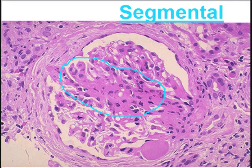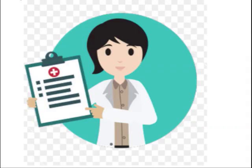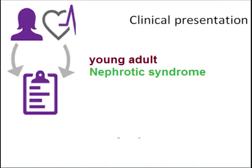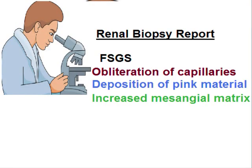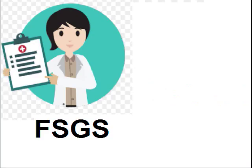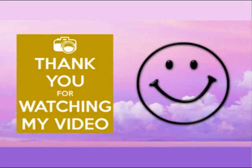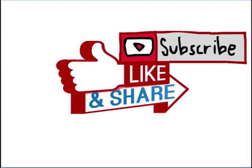Making a provisional diagnosis, we look at the points which support our diagnosis from the clinical presentation: young adult with nephrotic syndrome. The renal biopsy report reveals Focal Segmental Glomerulosclerosis. So a diagnosis of Focal Segmental Glomerulosclerosis was made. Thank you for watching this video — please subscribe to the channel, like, and share the video.